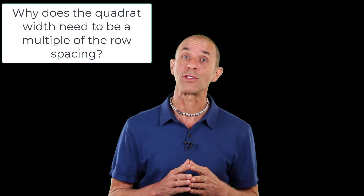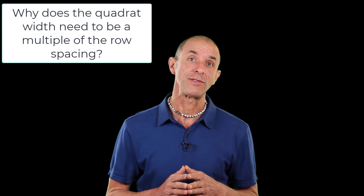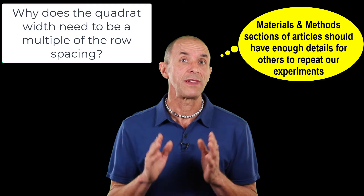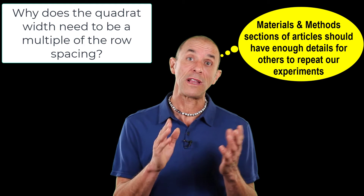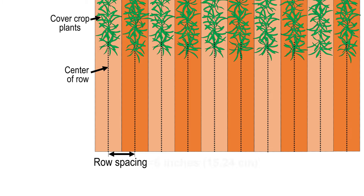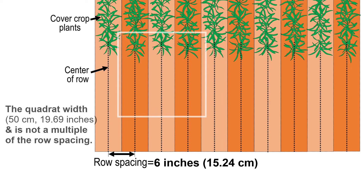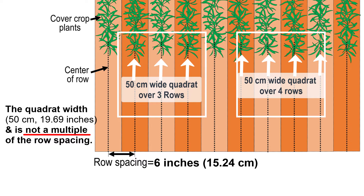You might be wondering why the width of the quadrat needs to be a multiple of the row spacing. There are two important reasons. First, if the quadrat width is not a multiple of the row spacing, it can be unclear to people reading your articles or following your methods to know how many rows of the cover crop were sampled. For example, where cover crop rows are spaced six inches apart and the quadrat width is 50 centimeters — as was the case in many of my studies — that quadrat width could be placed over three or four rows, but the reader won't know that unless you state it in the materials and methods section.